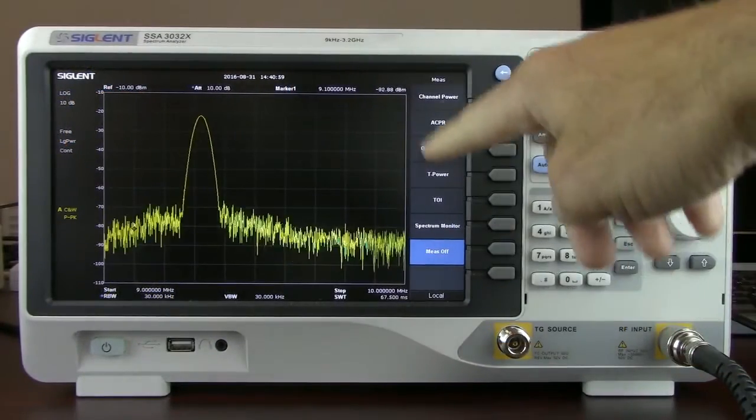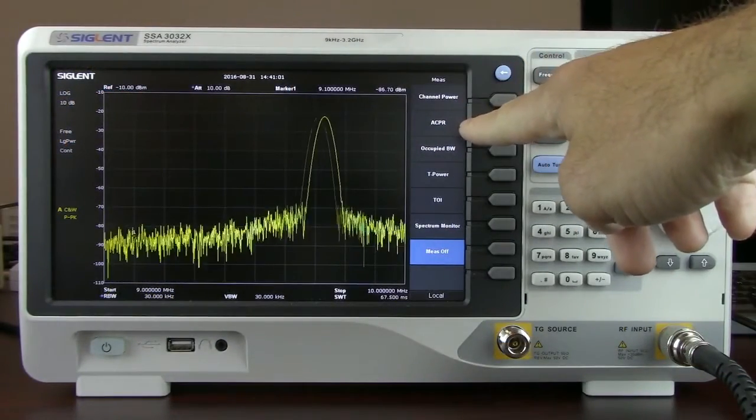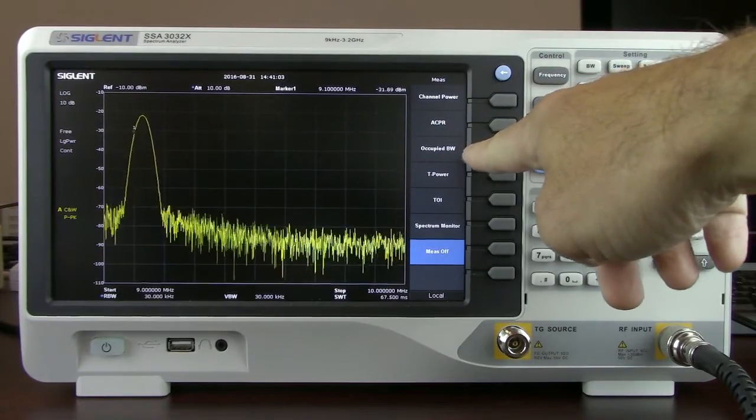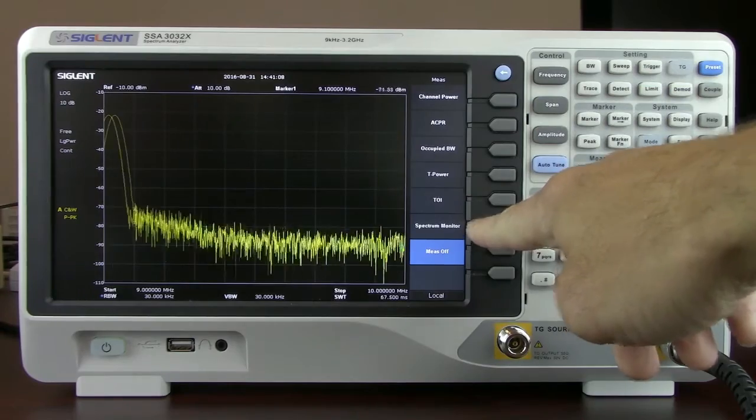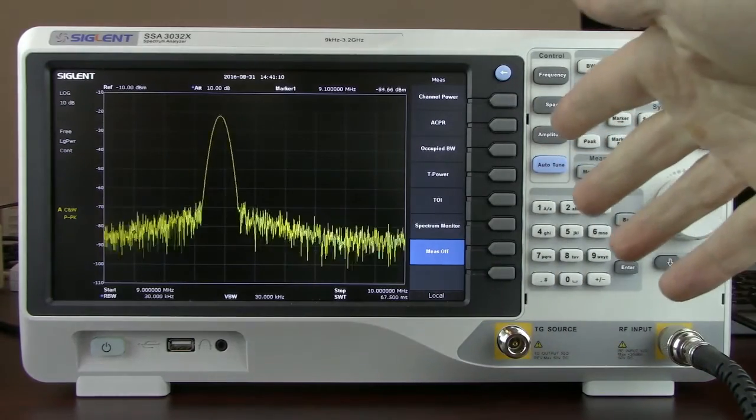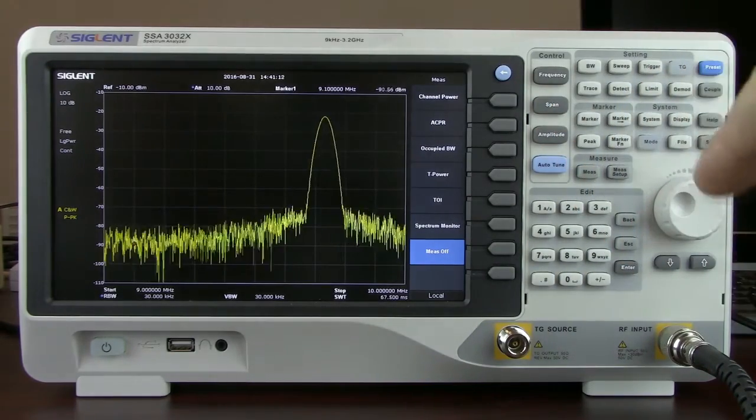If we press the measure key we'll see channel power, adjacent channel power, occupied bandwidth, total power, third order intercept, and spectrum monitor. I'd like to show the spectrum monitor because this is also a feature that isn't available on many other spectrum analyzers.